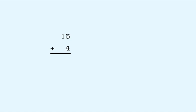We know that 13 is equal to 10 plus 3. After rewriting our 13, we can now add the 3 and the 4 together first. 3 plus 4 is equal to 7.